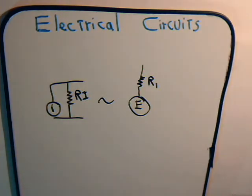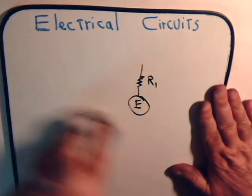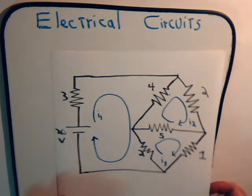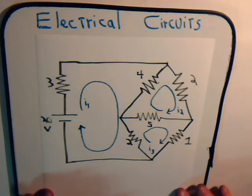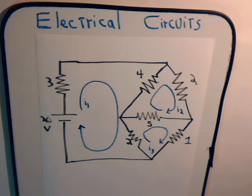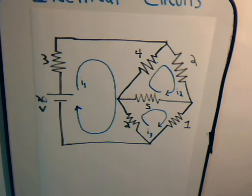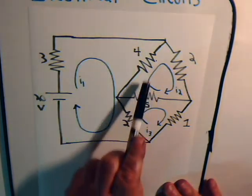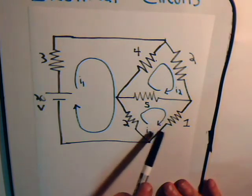For this problem, it's just another straightforward example of the format approach for mesh current analysis. Let's see how this is set up. We have three different loops here: one, two, and three.